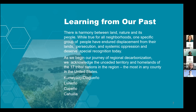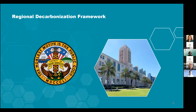Reconocemos la armonía que existe entre la tierra, la naturaleza y sus pueblos originarios que han sufrido desplazamientos, persecuciones y opresión sistémica. Manifestamos nuestro respeto por el territorio y las tierras natales no cedidas de las 17 naciones tribales de nuestra región — el mayor número de cualquier condado de Estados Unidos — de cuatro grupos culturales: los comeya, diegueño, los cupeño y los cahuilla. A medida que el cambio climático amenaza la región, deseamos aprender del conocimiento tradicional indígena para deshacer las injusticias del pasado.